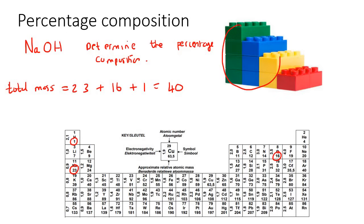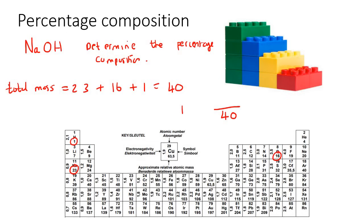Just like having 10 Lego blocks, you put 40 at the bottom. When asked about the blue Lego blocks you said 3 out of 10 — similarly, for the percentage of Na: Na has a mass of 23 out of a total of 40, multiplied by 100, gives you 57.5%. So 57.5% of NaOH is Na.